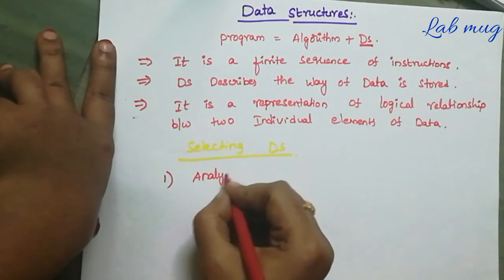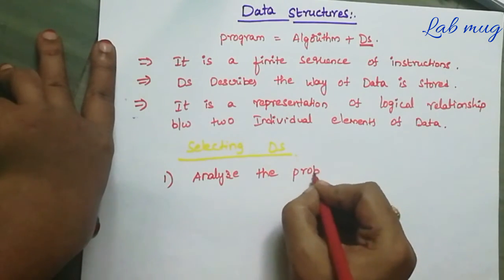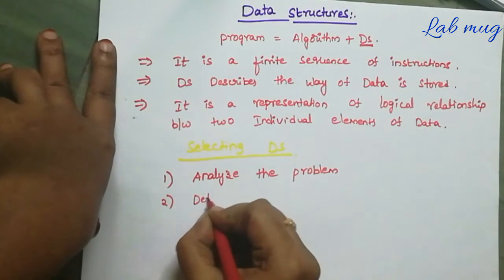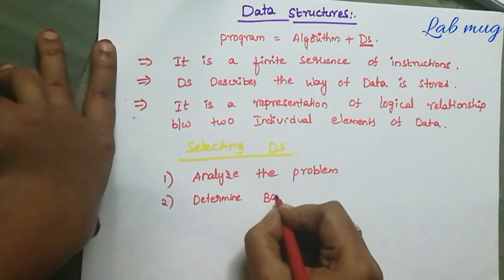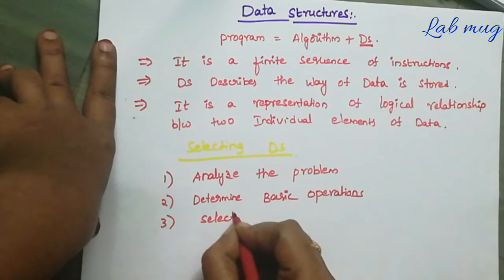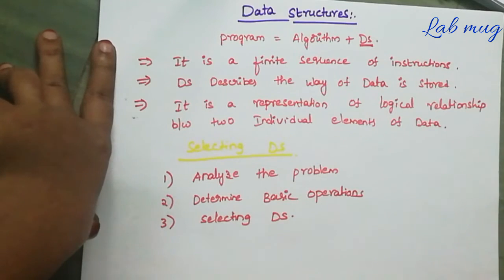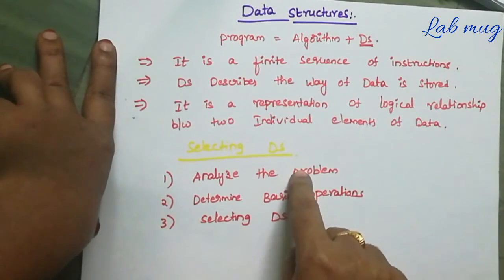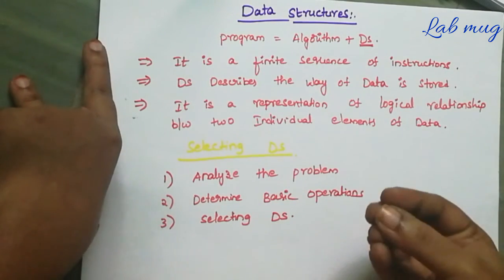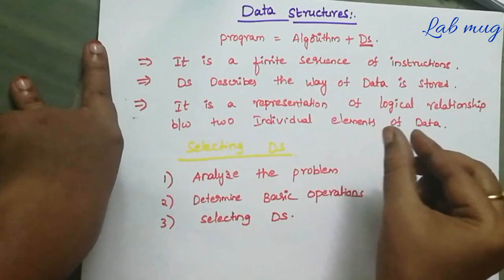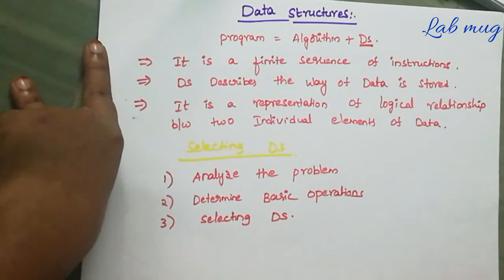First point: analyzing - analyze the problem. So first manam kunna problem, each and every problem ni first manam understand cheppa edha anandu, very small modules ga design cheppa edha anandu - analyze the problem. Next one: determine basic operations. And after that: selecting DS. So first manam kunna project enti, manam kunna program enti - manam cheppa edha anandu. First one analyze the problem, a problem ni analyze cheppa edha anandu. Second: e operations perform cheppa edha anandu.